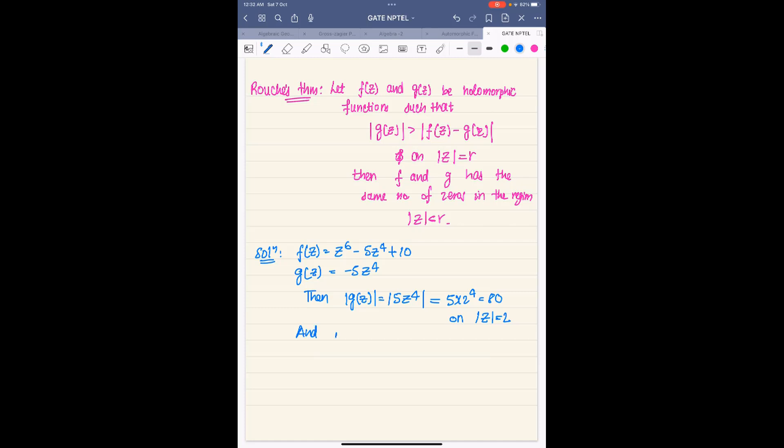And what is f(z) minus g(z)? This is z to the power 6 plus 10. And this is less than or equal to |z|^6 plus 10 by triangle inequality, and this is equal to 2 to the power 6, which is 64, plus 10, which equals 74.